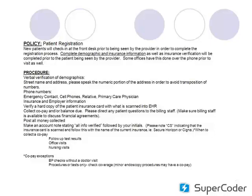For future collections, make sure you capture phone numbers, emergency contacts, cell phones, relatives, primary care physician, and employer information. Also make sure you're scanning insurance card copies into your electronic health record, and collect co-pays and any balances due. Make sure billing staff are available to discuss your financial policy. Whenever someone is verbally or in person verifying this information, have that person put their initials in your system so you know who to follow up with — and that should be a mandate in your office, not a suggestion.